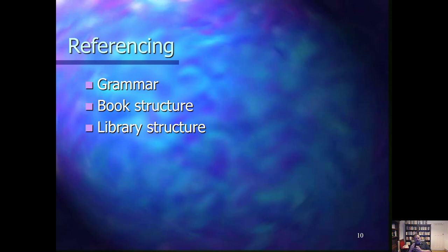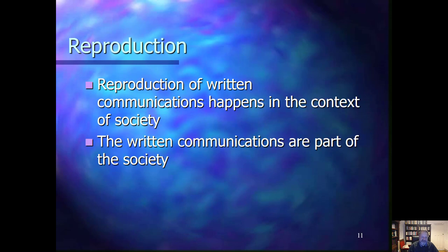If you look at the referencing, we have the grammar of the written language, which tells you how written words can follow each other to make meaningful sentences, and what parts of a sentence are required to make them meaningful. Book structures provide additional referencing structure in the same way as library structures do. These help to find which parts of text communications are relevant and appropriate in the context of a particular search for references. The reproduction of written communications happens in the context of society, generated by humans or by automated tools — for example, tools which summarize written text or the most recent transformer models which can generate written text.